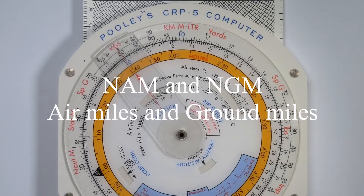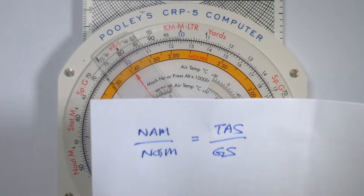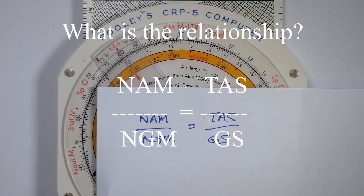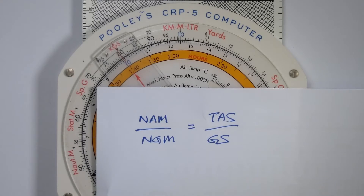In this video I'm going to show you how to solve nautical air miles and nautical ground miles problems on the Pooley's CRP5 flight computer. Here's the relationship of nautical air miles, nautical ground miles, true air speed, and ground speed. Normally we would solve for one of these variables by substitution into this equation. The CRP5 allows us to do that without really going into the calculation. If you were using the calculation method, you can use the CRP5 as a check, or vice versa.